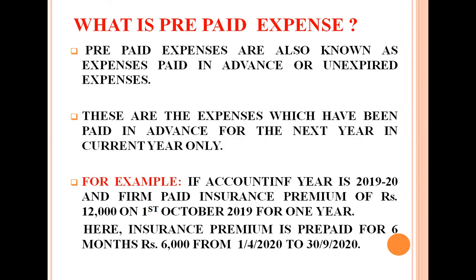We have to take income and expense of one year only — we follow the accounting period concept. So if any expense is prepaid, meaning it belongs to the next year, we cannot include it in the current year. We have to subtract that prepaid amount from the particular expense paid.